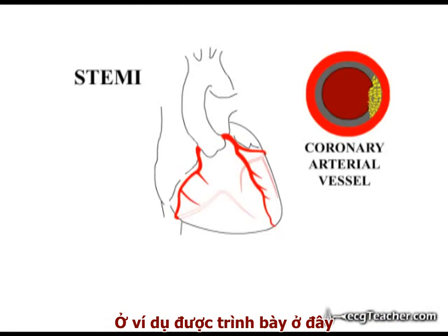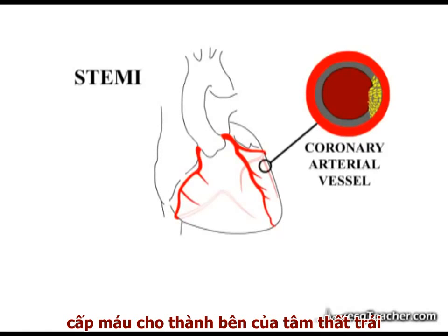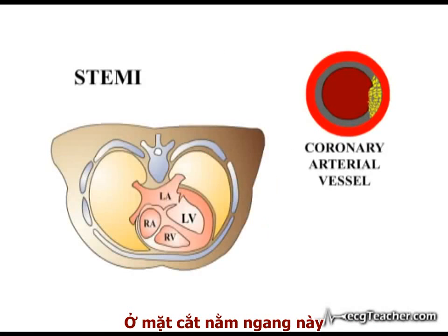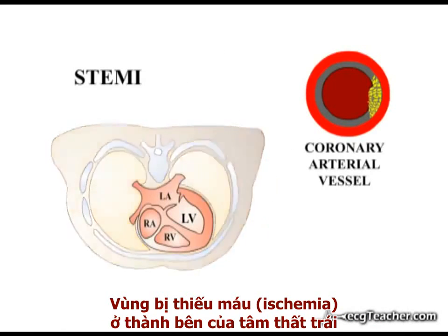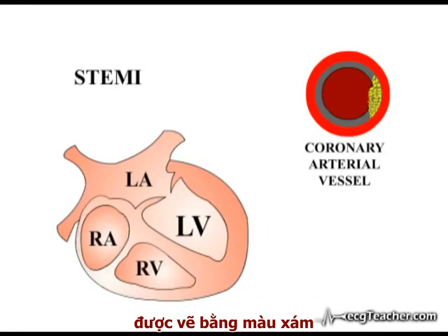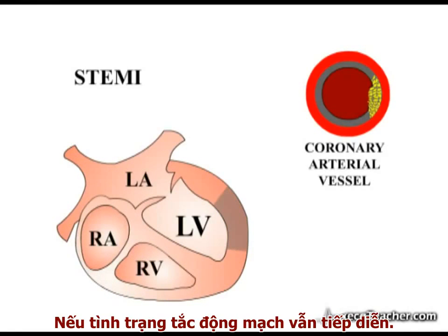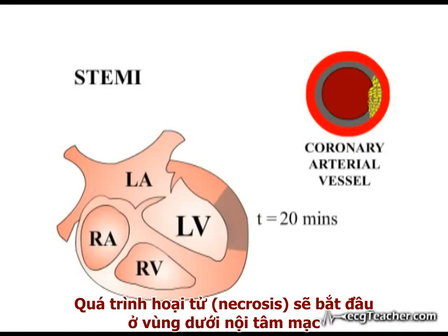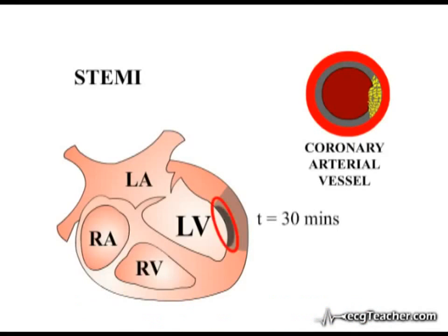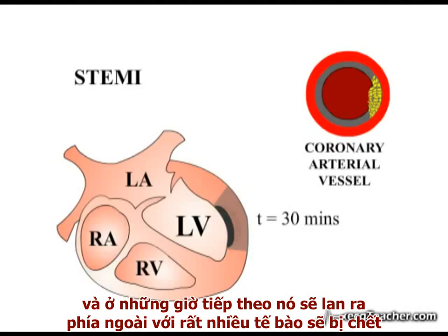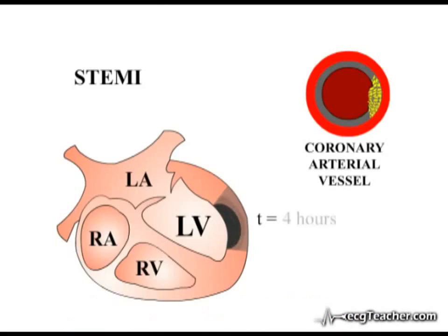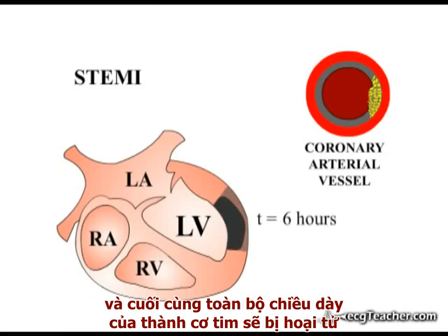In the example shown here, the patient has developed a complete occlusion of the artery which supplies the lateral wall of the left ventricle. In this horizontal section, the ischemic area in the lateral wall of the left ventricle is shown in grey. If the blockage of the arterial lumen persists, necrosis begins in the subendocardial region and in the subsequent hours spreads outwards in a wave of cell death, which may ultimately involve the full thickness of that region of the myocardial wall.